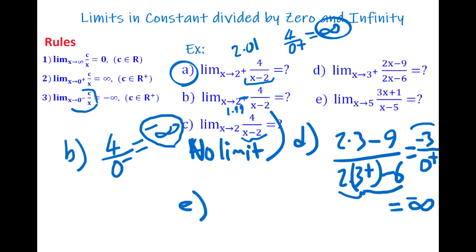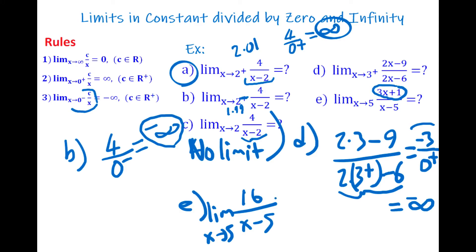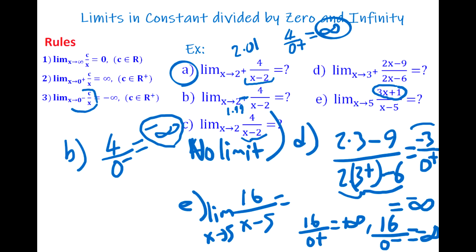In part e, 5 is a critical point, so I need to check both one-sided limits. Substituting 5 into the numerator gives 15 plus 1 = 16, so we have 16 divided by (x minus 5). From the right side: 16 divided by 0+ gives positive infinity. From the left side: 16 divided by 0− gives negative infinity. Since they're not equal, there is no limit in part e.